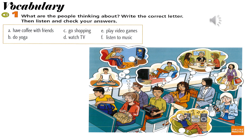Unit 5: What do you do for fun? Page 30, Vocabulary. What are the people thinking about? Write the correct letter, then listen and check your answers. 1 - B: do yoga. 2 - E: play video games. 3 - D: watch TV.